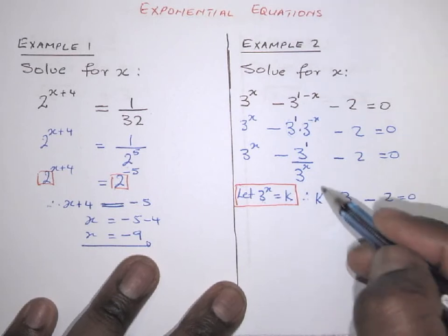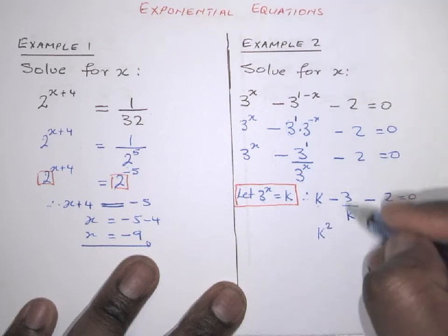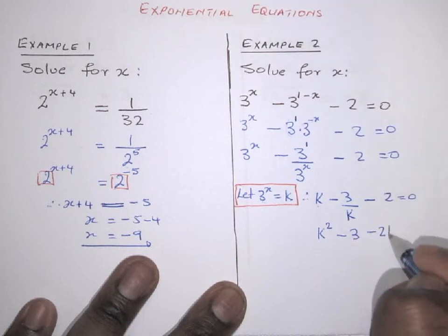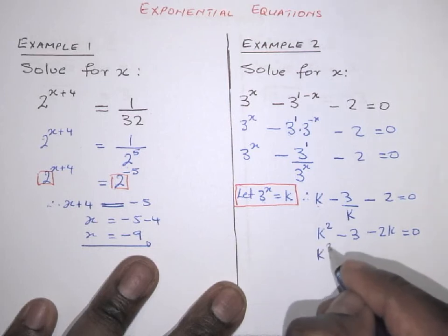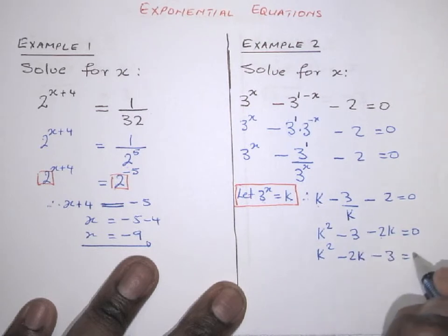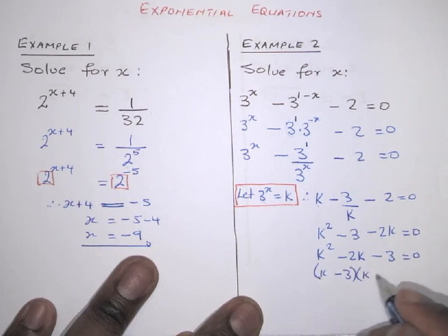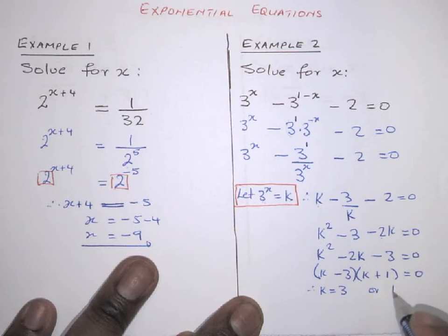Now it's a simple equation with denominator k. Multiply each term by k: k² − 3 − 2k = 0. Rearranging gives k² − 2k − 3 = 0. Factorising: (k − 3)(k + 1) = 0.